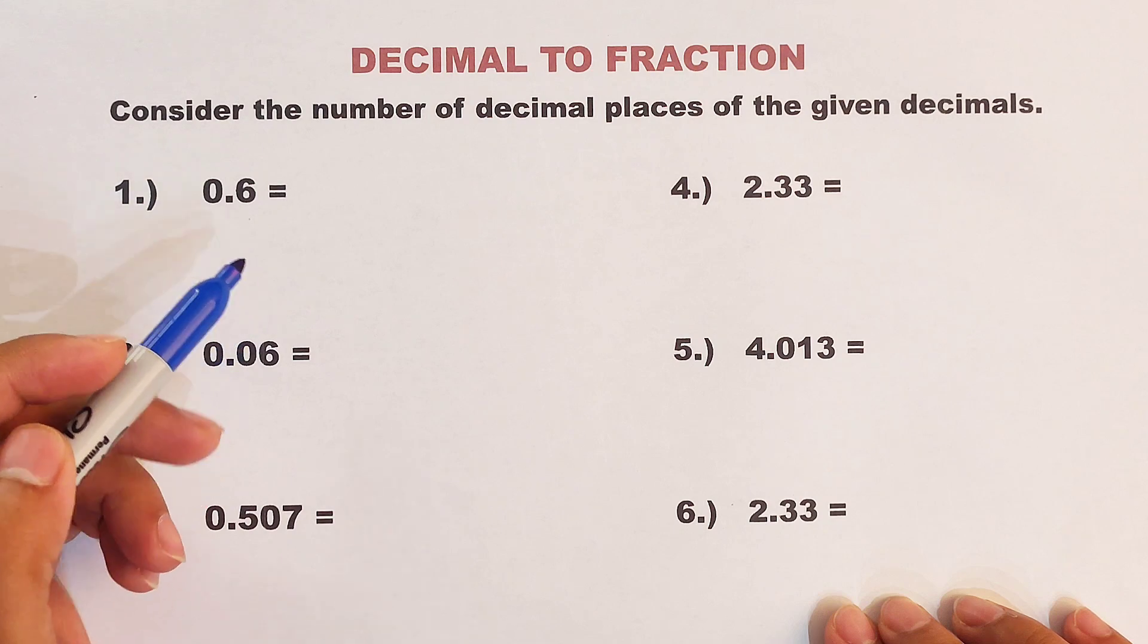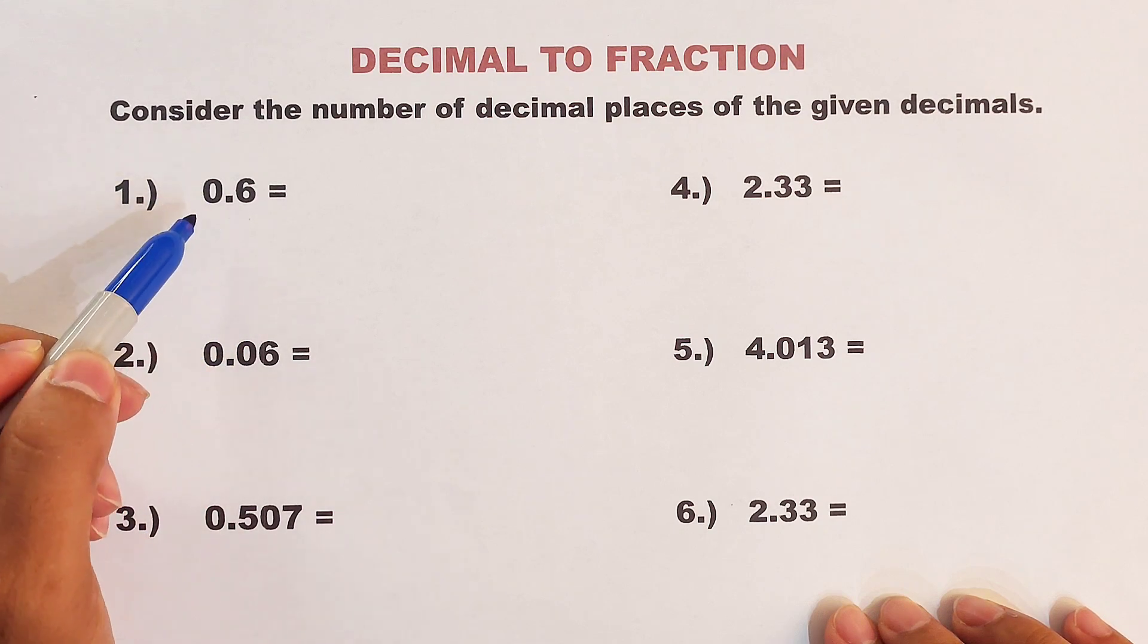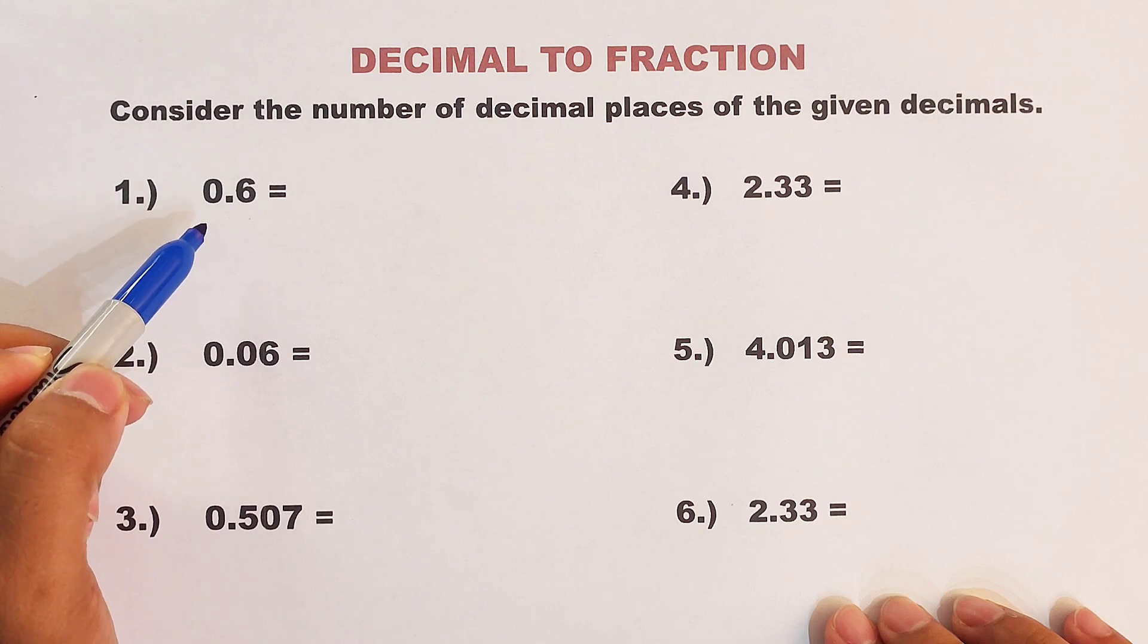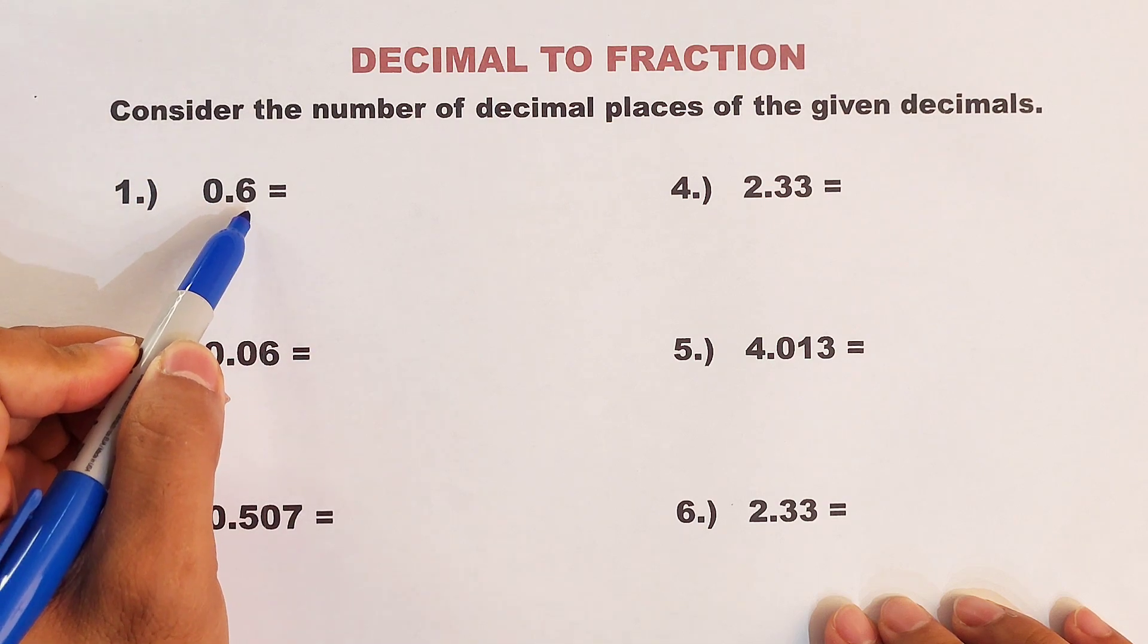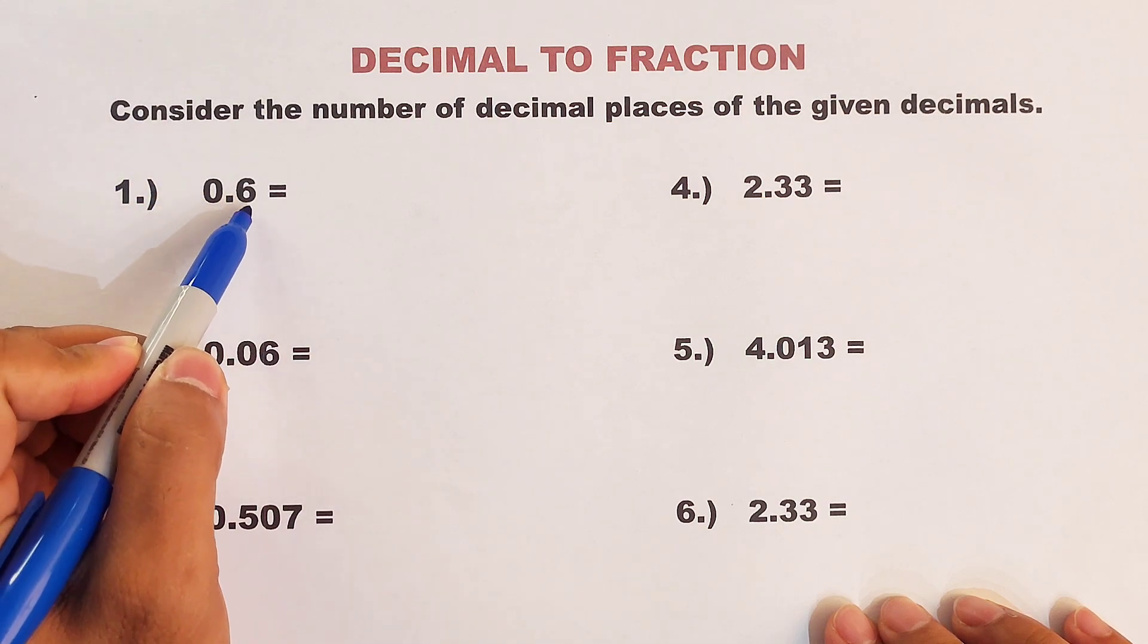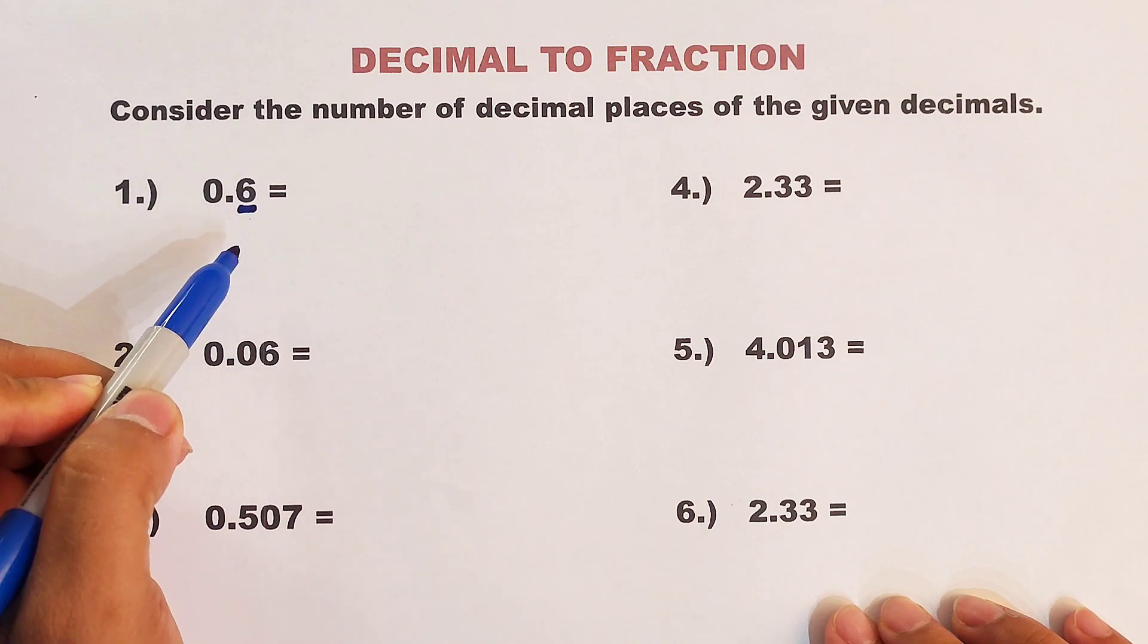So what do I mean by that? For example, we have here in example number one, we have 0.6. We need to count the number of decimal places here. So in 0.6, we have one decimal place.